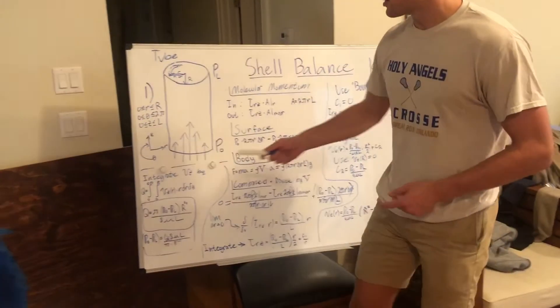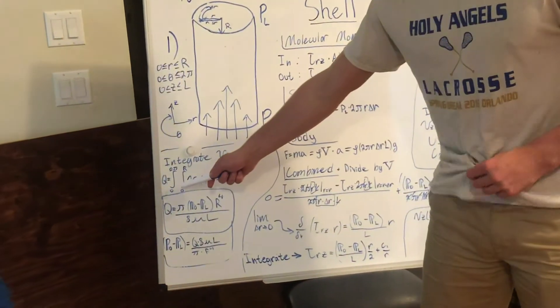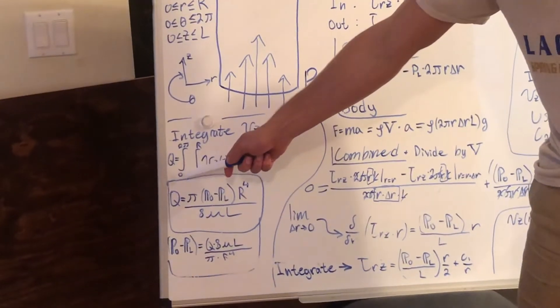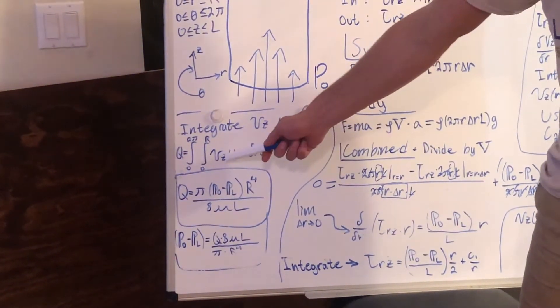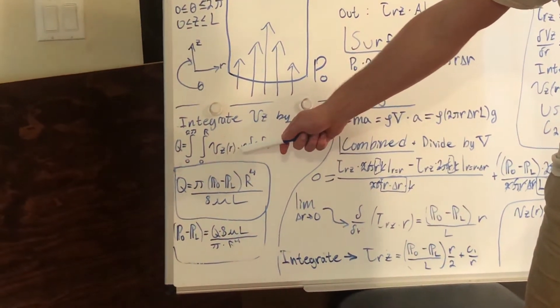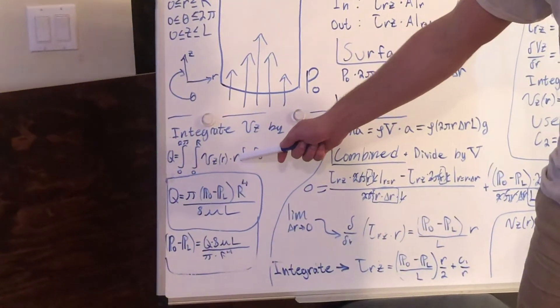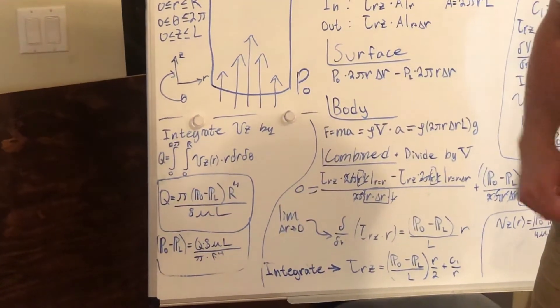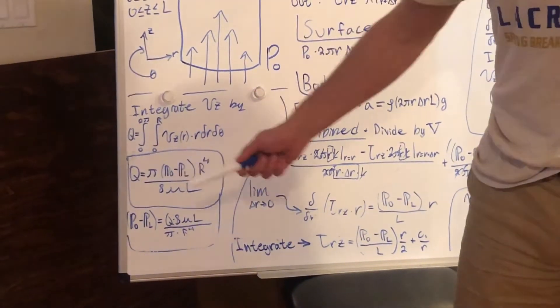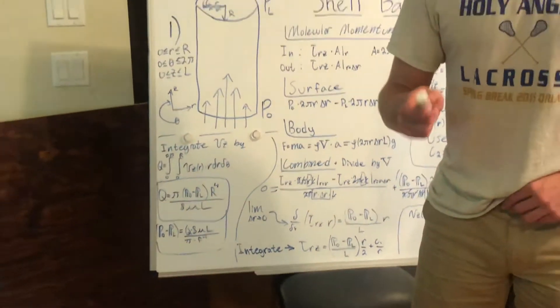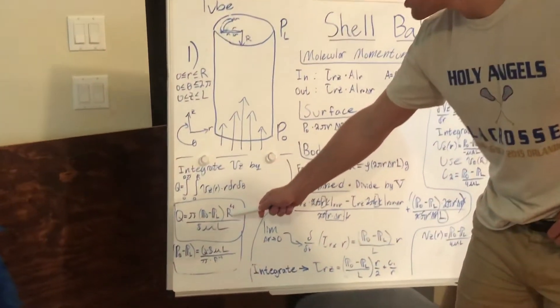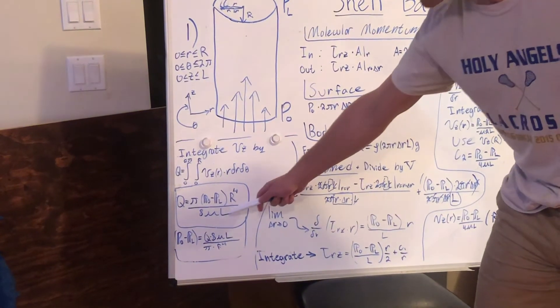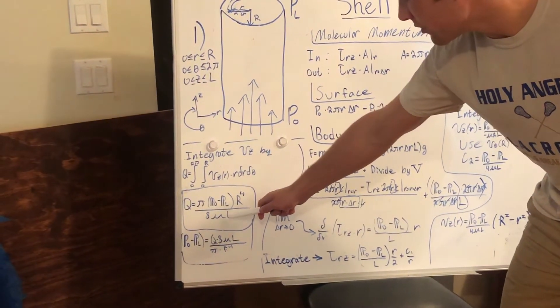Well, we integrate our velocity by our area, essentially. So from 0 to 2π and 0 to r, we take our velocity equation and integrate it by times r dr dθ. And from there, we find that our volumetric flow rate, which is the amount of beer coming out of the tap, is equal to π times our pressure differential times big R to the 4th over 8μL.